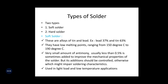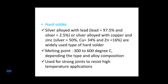Hard solder: lead 97.5% with silver 2.5% gives a silver alloy; another combination is silver 50%, copper 34%, zinc 16% — all totaling 100%. These are widely used for hard solders. The melting temperature ranges from 300 to 600 degrees Celsius. Depending on the material combination you want to join, you use hard or soft solder. Hard solder is used for strong joints and resists higher temperature applications.